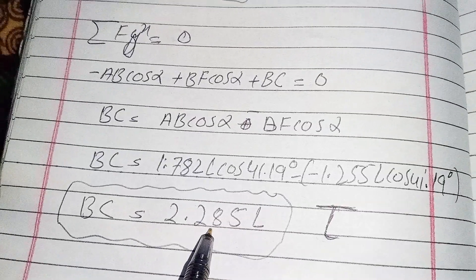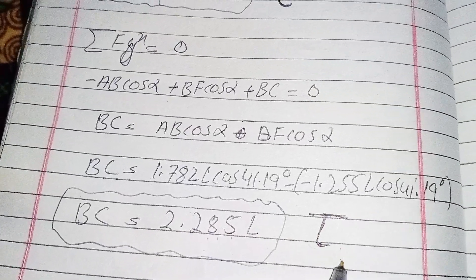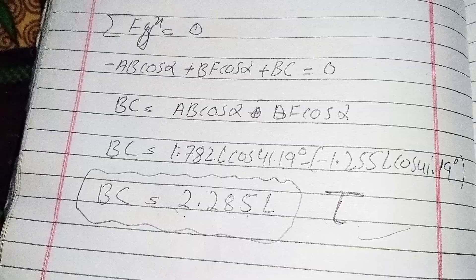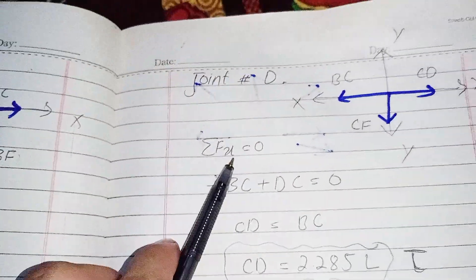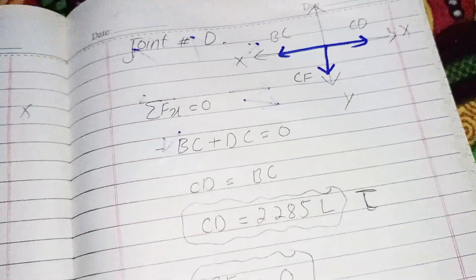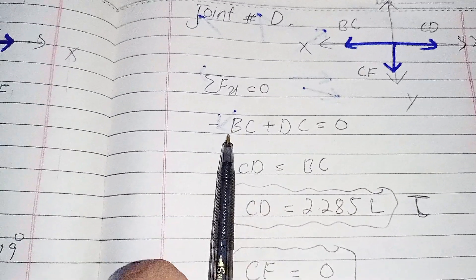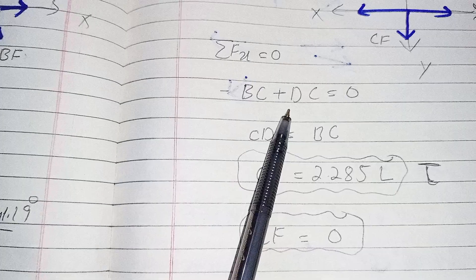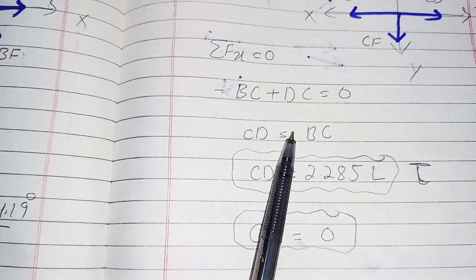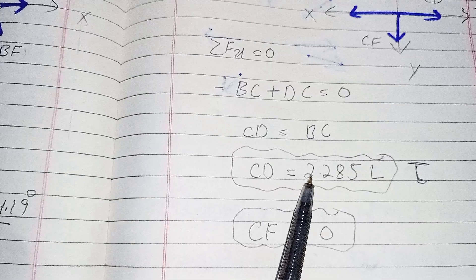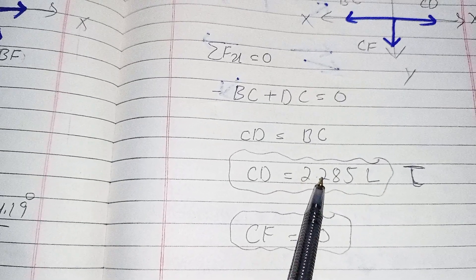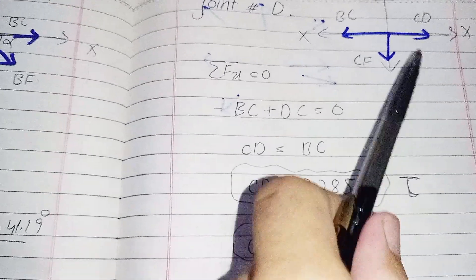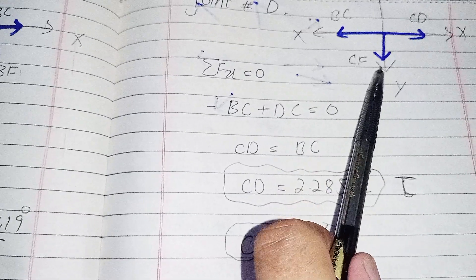The answer BF equals 2.285L is in tension — the positive sign shows my assumption was right. Now I take joint D. Summation of horizontal forces equals zero: BC plus CD equals zero, so CD equals BC equals 2.285L, which is in tension.